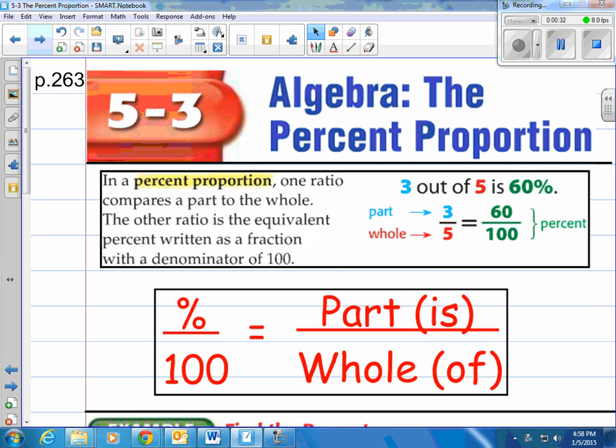The other ratio is the equivalent percent written as a fraction with a denominator of 100. And then of course you can see in the blue, the red, and the green there,